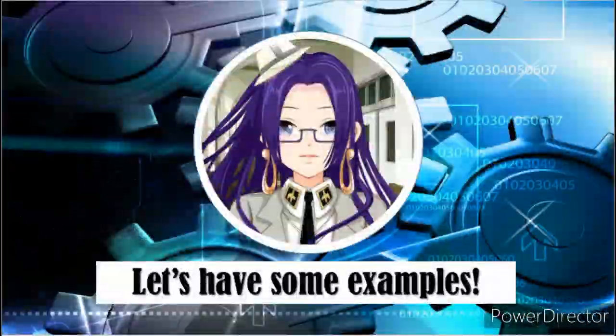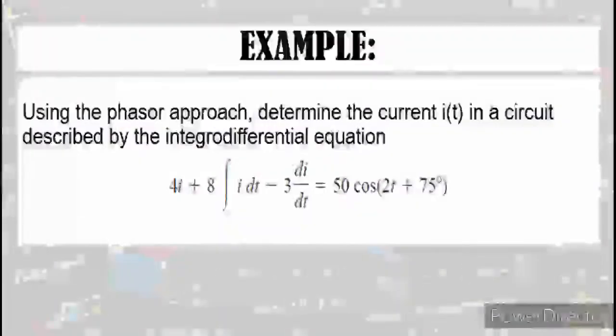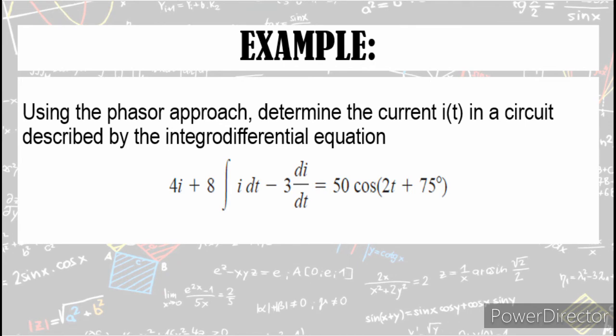Now, to fully understand, let's have some examples. Using the phasor approach, determine the current i(t) in a circuit described by the integral differential equation: 4i + 8∫i dt - 3di/dt = 50cos(2t + 75°).